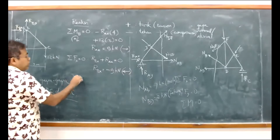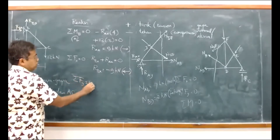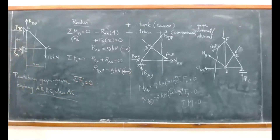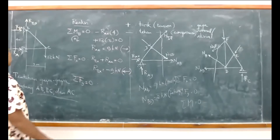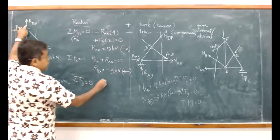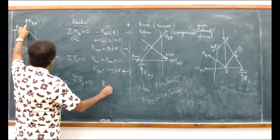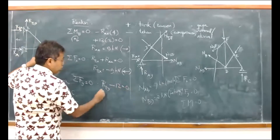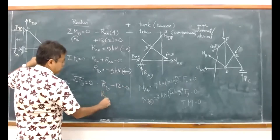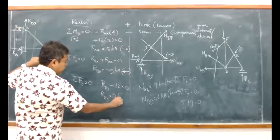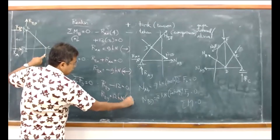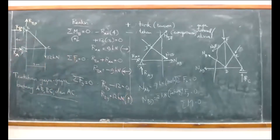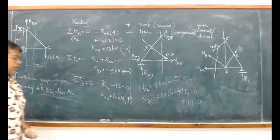Lalu sigma FY sama dengan 0. Dapatnya RBY kurang 12 sama dengan 0, jadi RBY = 12 kilonewton ke atas. Jadi reaksi sudah kita peroleh. Kita bisa tinjau potongannya ke manapun.